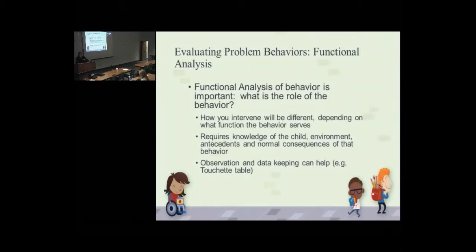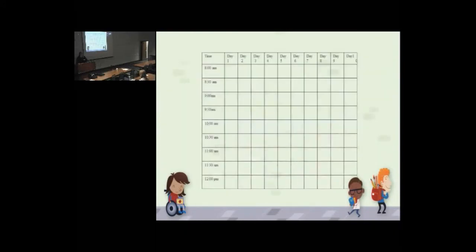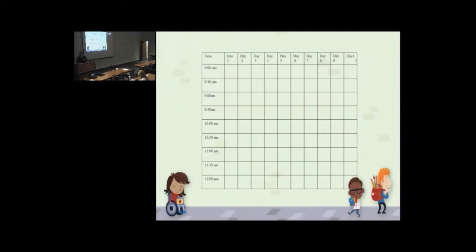Data keeping can also help. And there is a data keeping. Most of us don't have a ton of time for this, so we need it to be absolutely as user friendly and simple as possible. And so for behaviors that are really, really high-frequency behaviors, there's something called a touchette table that is very, very helpful. And the way that the touchette table is used is over the course of 10 or 11 days, you track the behavior. And again, this is mostly for really high-occurring behavior.